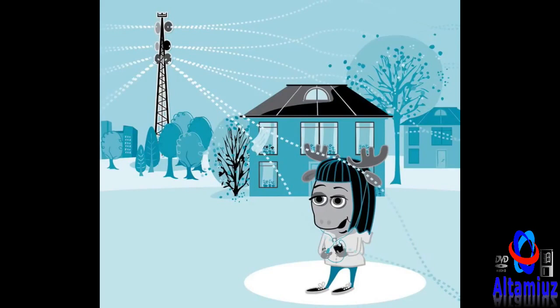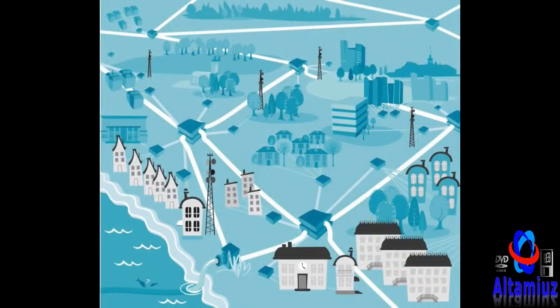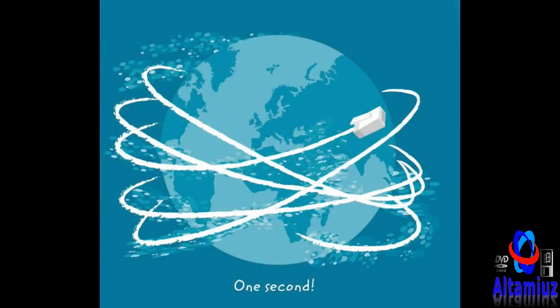When you use the internet, your device is part of the internet network. The internet cables in the ground form a network. These small networks are interconnected with larger networks and then further all over the world with the help of wires that send information super fast — nearly five times around the earth per second.